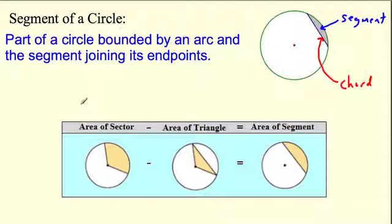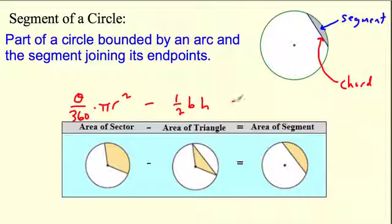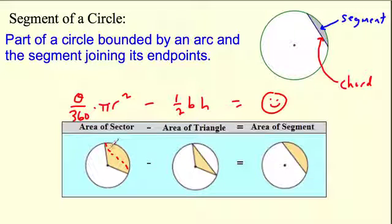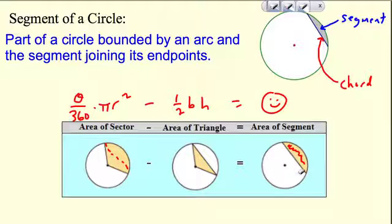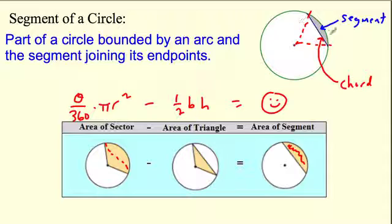So how do you find the area of a segment? It's just a process: you find the area of the sector, then subtract the area of the triangle — one-half base times height — and that gives you the area of the segment. Think about it: the sector is the whole slice; you subtract out that triangle and you're left with just the little crust region. Find all of it, subtract out the triangle, and that's what's left.